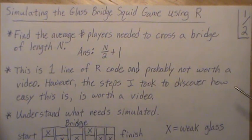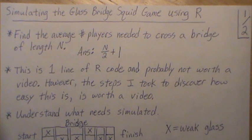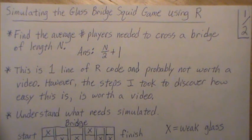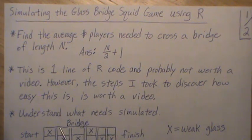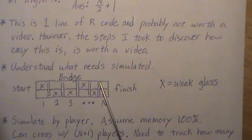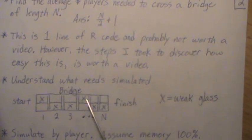The downside is that in the process of creating this R code, it turns out I only need one small line of code to simulate four million replications of this glass bridge squid game. I thought I can't create a video on one line of R code, but then it dawned on me that the process to get to that one line of code might be interesting. So this video is about going through my thought process to get down to that one line of code.